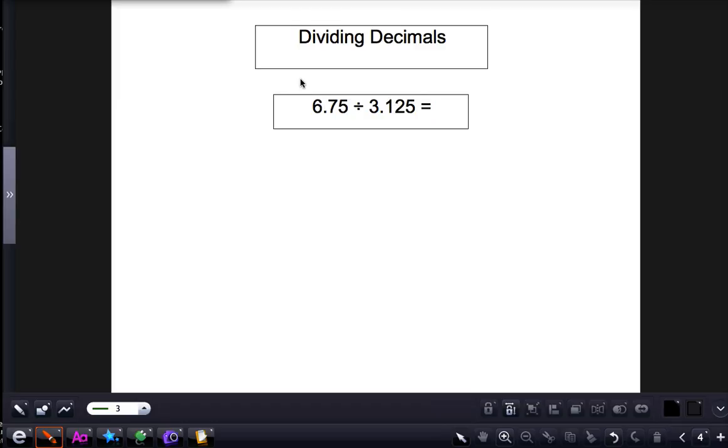This number 6.75 in the beginning of the division sentence is called the dividend. And this is the divisor.